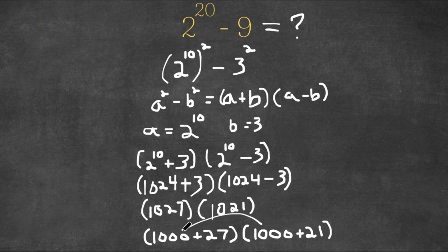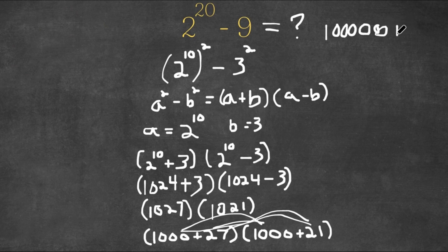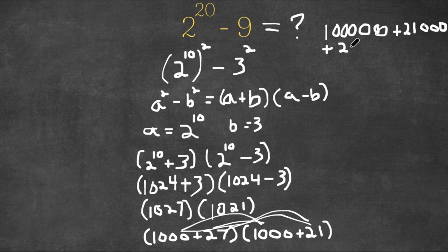Now we're going to distribute 1027 times 1021. So we're going to do 1000 times 1000, 1000 times 21, 27 times 1000, and 27 times 21. Now 1000 times 1000 is 1,000,000, plus 21,000, plus 27,000, plus 567.